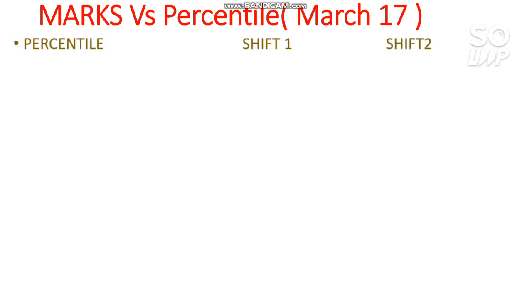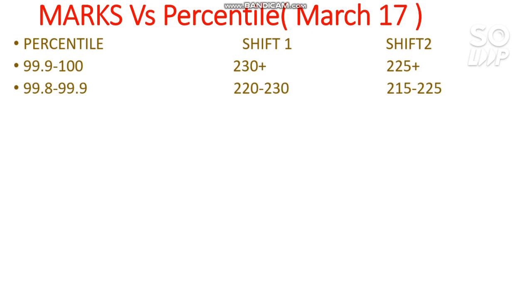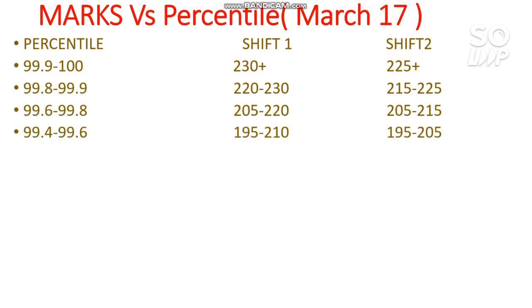Now for March 17 marks versus percentile — here is the detailed data for Shift 1 and Shift 2. For 99.9 to 100 percentile you need to score 230 plus in Shift 1 and 225 for Shift 2. For 99.8 to 99.9 you need to score 220 to 230 for Shift 1.